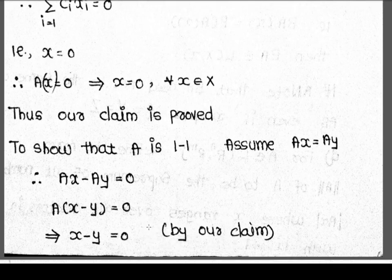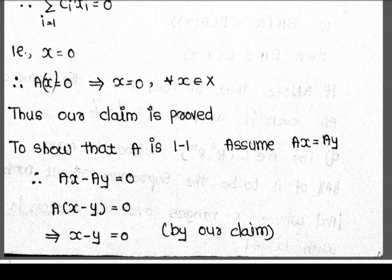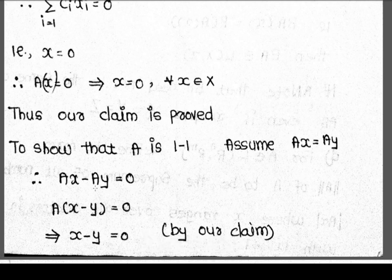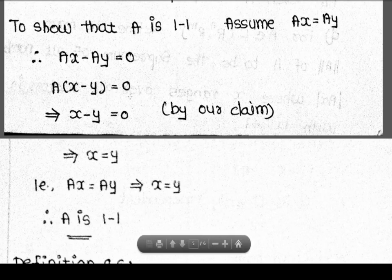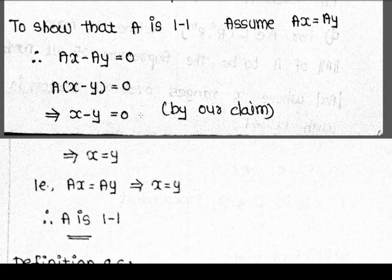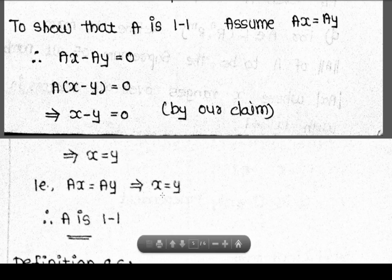For the converse: if A(x) = A(y), then A(x) - A(y) = 0, which gives A(x - y) = 0 vector. Since we proved A(x) = 0 implies x = 0, we get x - y = 0, which implies x = y. Therefore A(x) = A(y) implies x = y, so A is one-to-one.